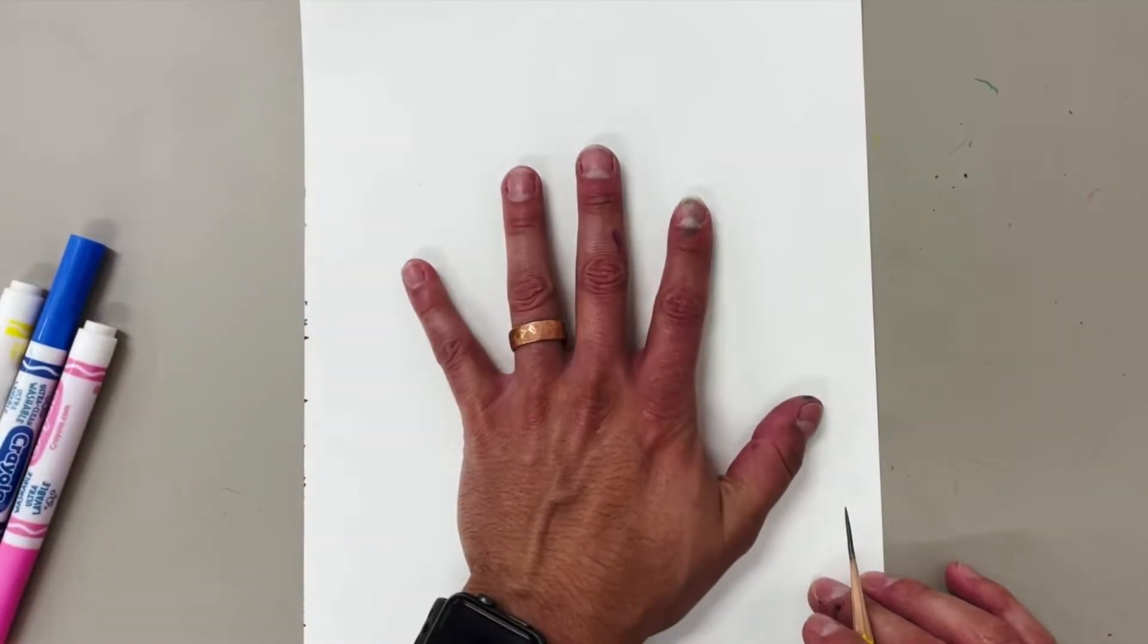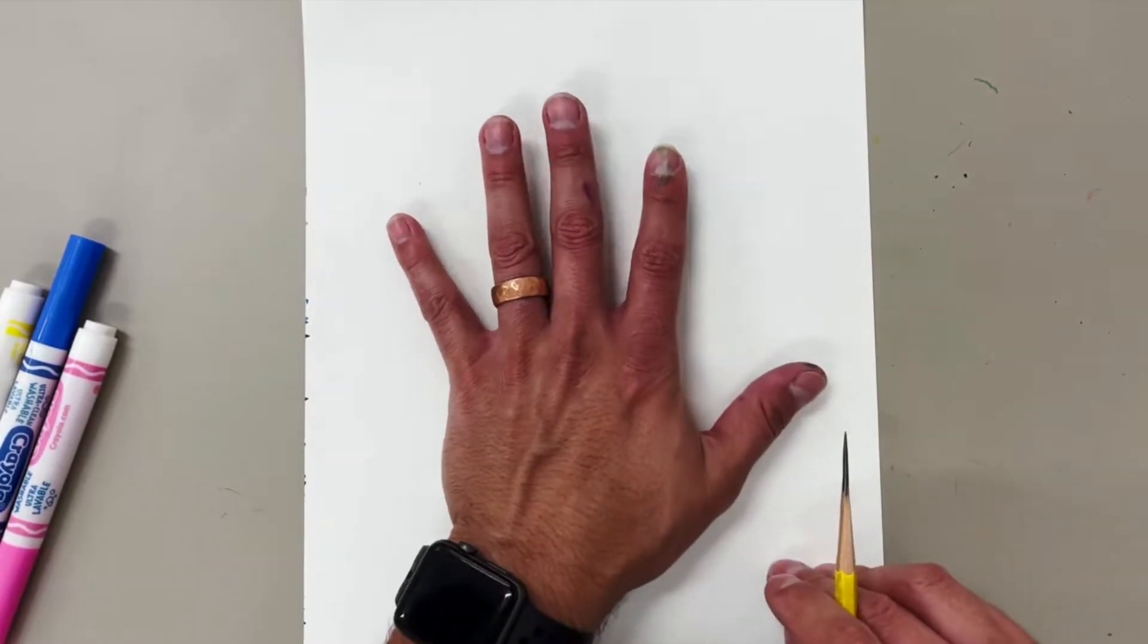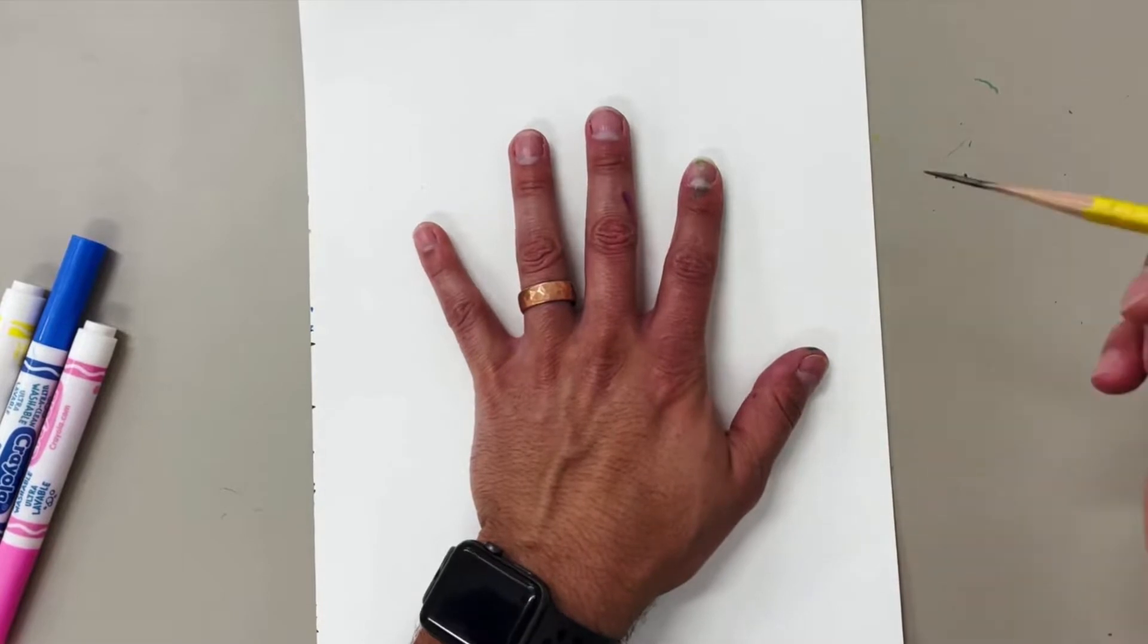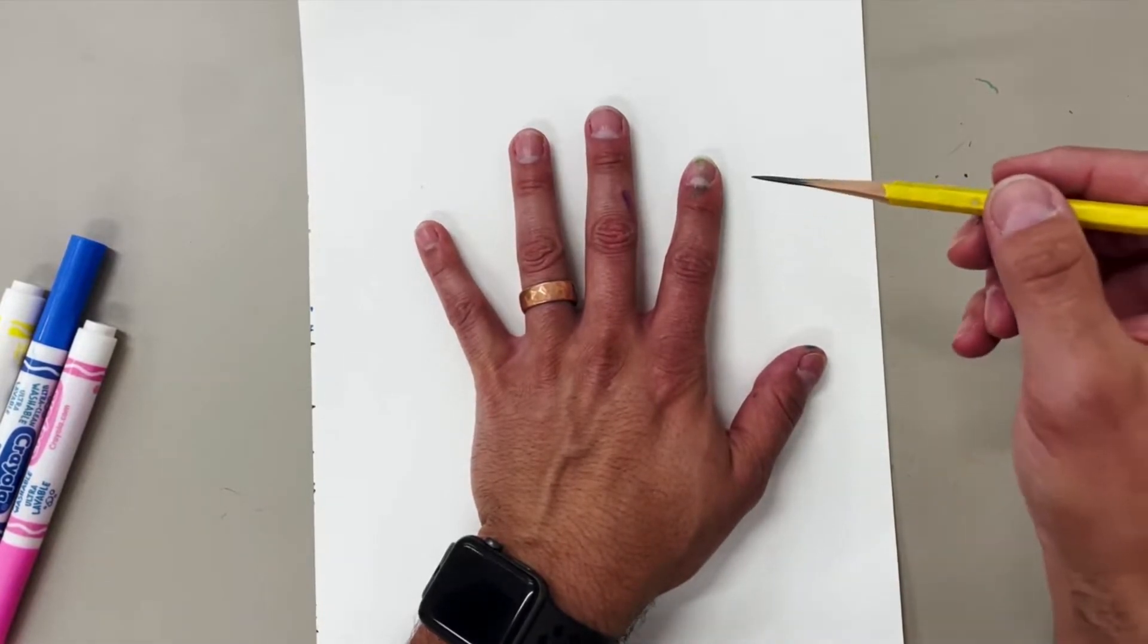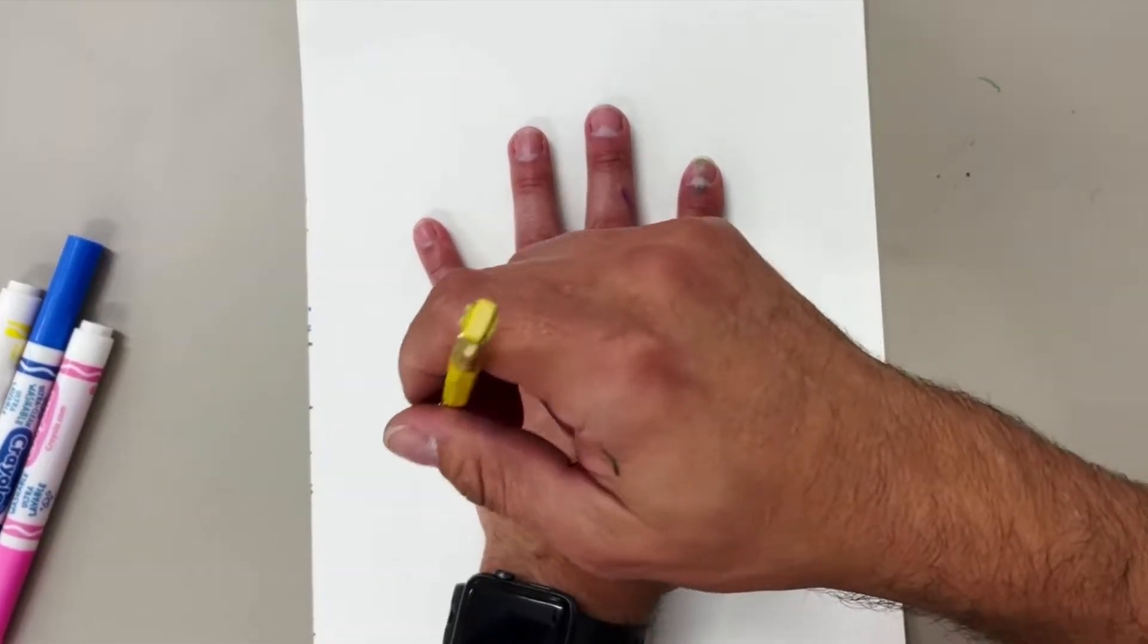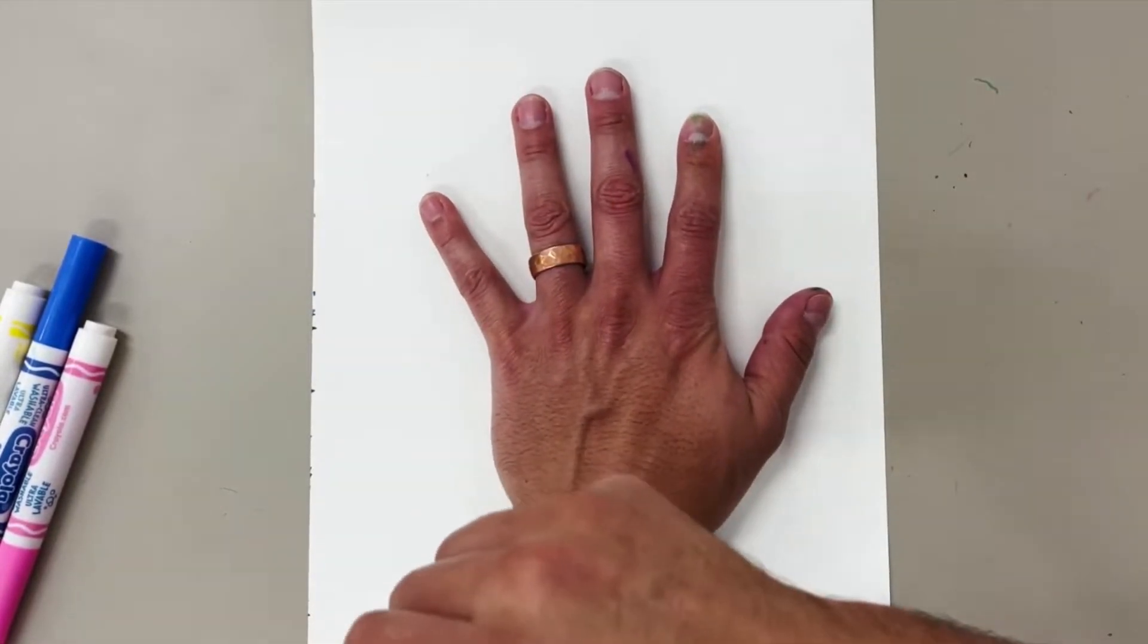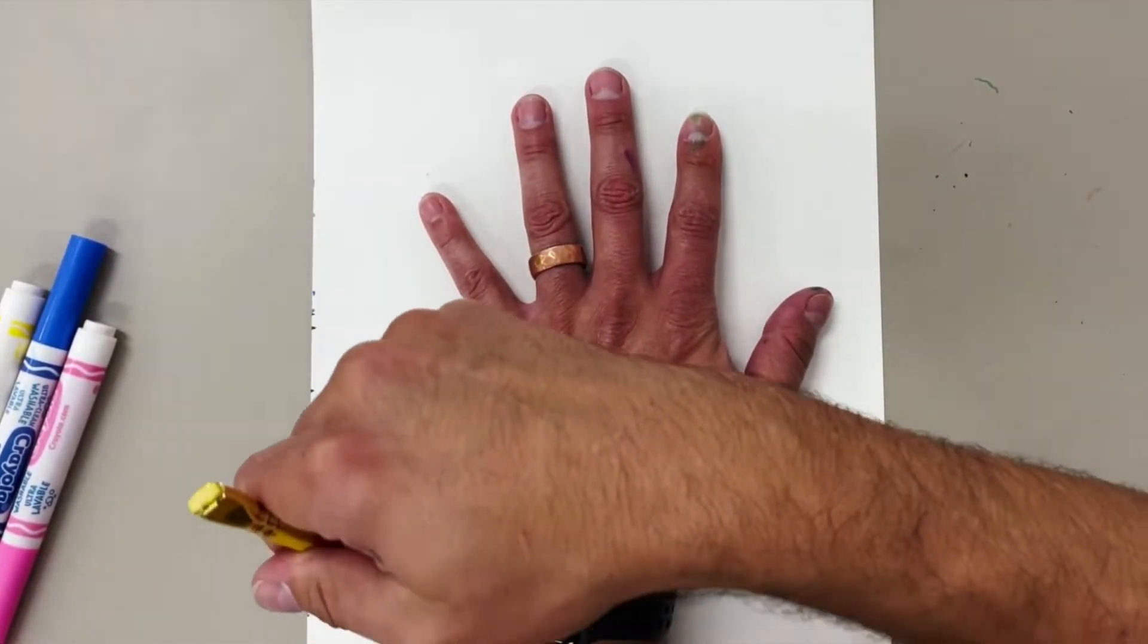So you're going to place your non-dominant hand on the middle of the paper. So whatever hand you do not use to draw, place it right there in the center. Spread your fingers out a little bit. And with your pencil I want you to very lightly and very carefully draw around the outside of your hand to get your tracing.